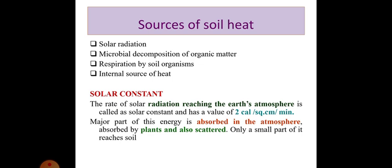First, we will discuss the solar constant. The rate of solar radiation reaching the earth's atmosphere is called solar constant and has a value of 2 calories per square centimeter per minute. Major part of this energy is absorbed in the atmosphere, absorbed by plants and also scattered. Only a small part of it reaches soil.